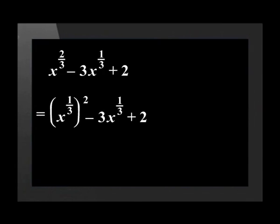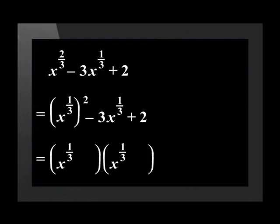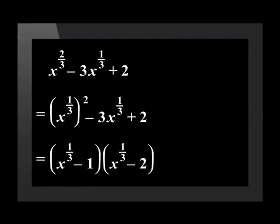We can rewrite x to the power of two-thirds as x to the power of one-third, all squared. So the expression becomes: (x^(1/3))² minus 3·x^(1/3) plus 2. We can now factorize using the factors of the first and last term to give the middle term, using two brackets. The first term in both brackets is x^(1/3). The factors of positive 2 that add to negative 3 are minus 2 and minus 1, giving (x^(1/3) − 1)(x^(1/3) − 2).